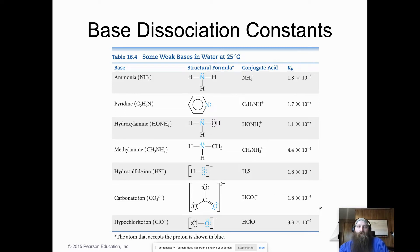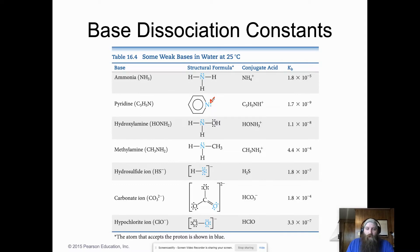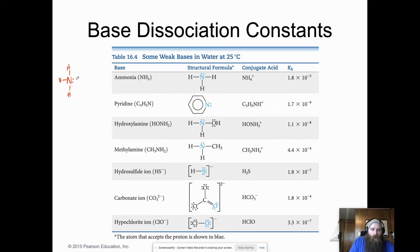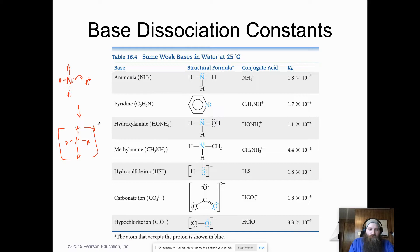We can look at a table of base dissociation constants tabulated just like our Ka's. The table highlights in blue the element that is going to accept the proton. For ammonia (NH3), those two lone pairs attack a hydrogen proton to give us NH4+, the ammonium conjugate.